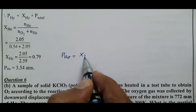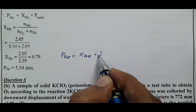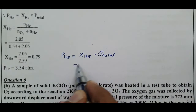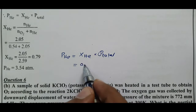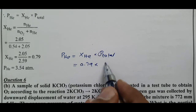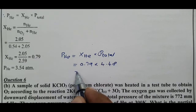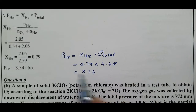Partial pressure of He = mole fraction of He × total pressure = 0.79 × 4.48 = 3.548 atm. This is the partial pressure of helium.